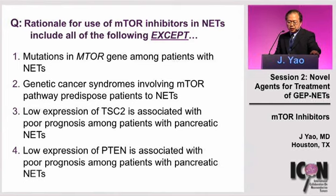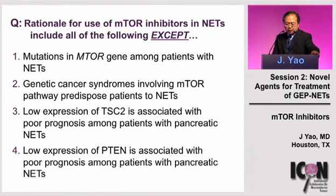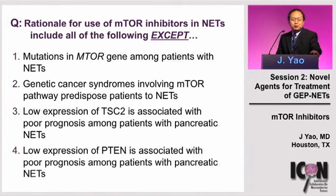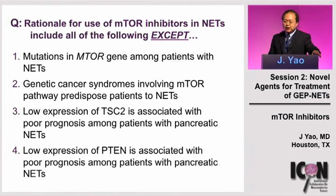Option one: mutation in the mTOR gene among patients with neuroendocrine tumors. Option two: genetic cancer syndromes involving the mTOR pathway predispose patients to neuroendocrine tumors. Option three: low expression of TSC2, or tuberous sclerosis 2 gene, is associated with poor prognosis in pancreatic neuroendocrine tumors. Option four: low expression of PTEN is associated with poor prognosis in neuroendocrine tumors. Which of these is not correct? We'll come back to this at the end.